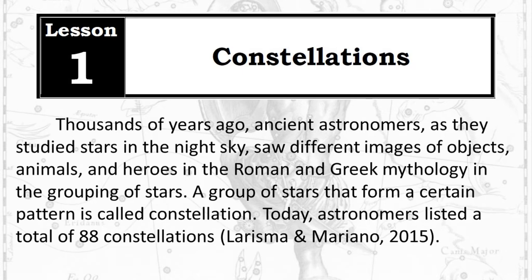Lesson 1: Constellations. Thousands of years ago, ancient astronomers, as they studied stars in the night sky, saw different images of objects, animals, and heroes in Roman and Greek mythology in the grouping of stars. A group of stars that form a certain pattern is called a constellation. Today, astronomers have listed a total of 88 constellations.